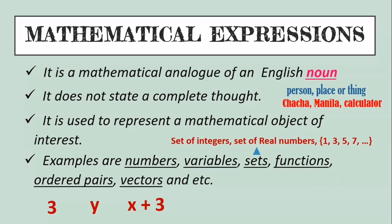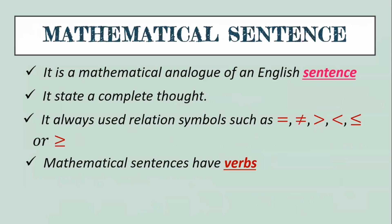We also have ordered pairs — our coordinates. For example, when graphing a point we have (9, 3), where 9 is x and 3 is y. And also we have vectors — in physics, for example, 110 Newtons at 30 degrees south of east. Those are all examples of mathematical expressions.